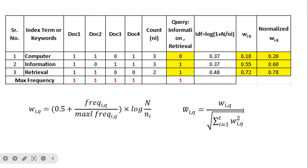First we calculate with respect to query terms using the formula: wIQ = 0.5 + (frequency of IQ / maximum frequency of IQ) × log(N / ni). Since keywords are not repeated, the maximum value is also one. The query is information retrieval, so computer is not present (0), and information and retrieval each have frequency 1. Dividing by the maximum of 1, and multiplying by log(N / ni) where N = 4 total documents and ni is the count of documents containing that keyword, we calculate wIQ values: 0.18, 0.55, and 0.72. After normalization — taking squares, summing, taking the square root, and dividing — we get normalized values of 0.20, 0.60, and 0.78.